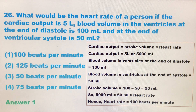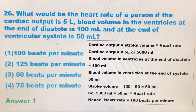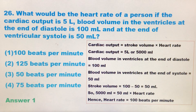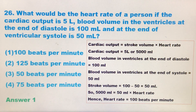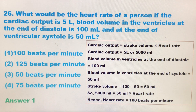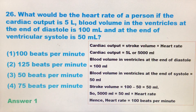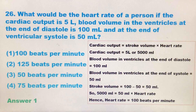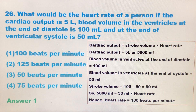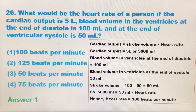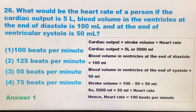Now we can substitute the values. The cardiac output of 5 liters can be converted to 5000 ml. The blood volume in the ventricles at the end of diastole is 100 ml and at the end of systole is 50 ml. Using these two data points, we calculate stroke volume by subtracting: 100 minus 50 equals 50 ml. Now substituting the values, we get heart rate equal to 100 beats per minute.